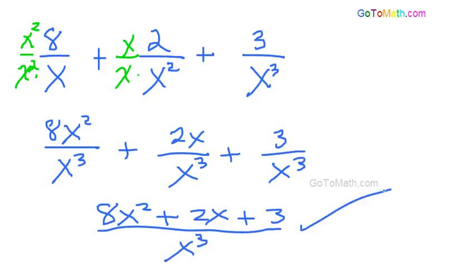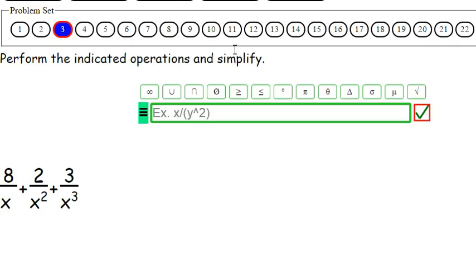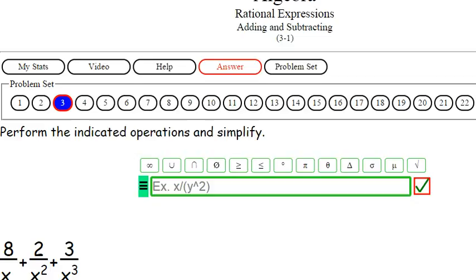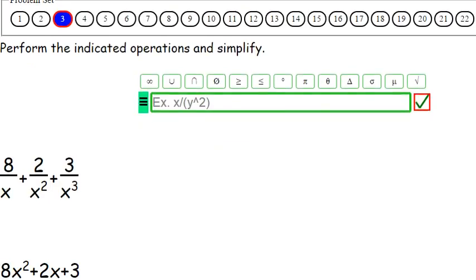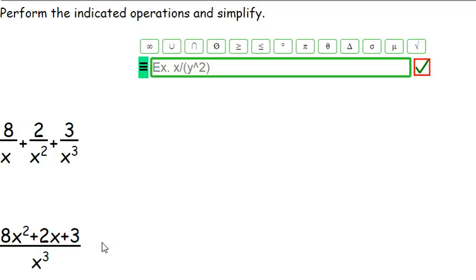It's all over x cubed. Ok, so let's see what we got going on here. 8x squared plus 2x plus 3 over x cubed.